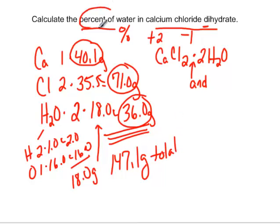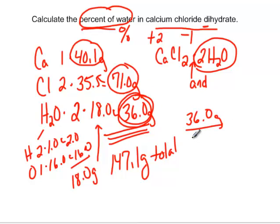And we want to find out the percent of water. So we take all of our water, which in this case is two waters, two moles, which in this case is 36 grams. So 36 grams, that's our water, divided by our 147, which is our total.